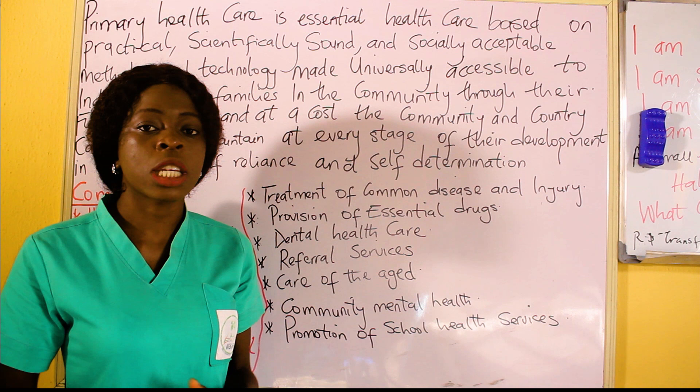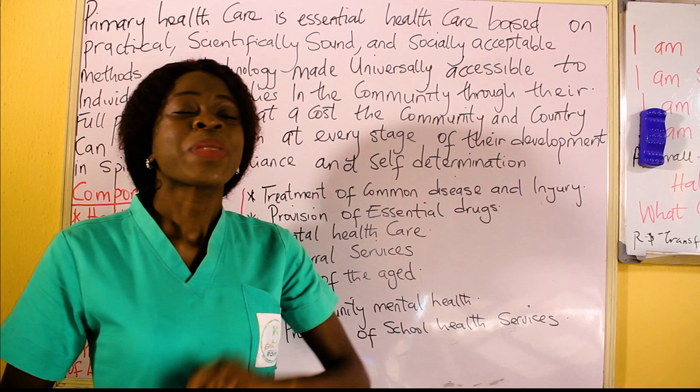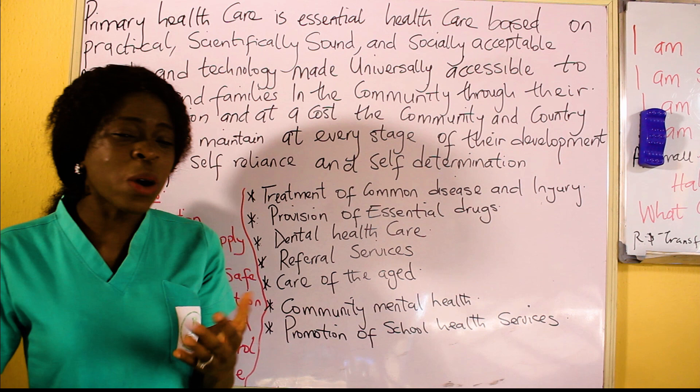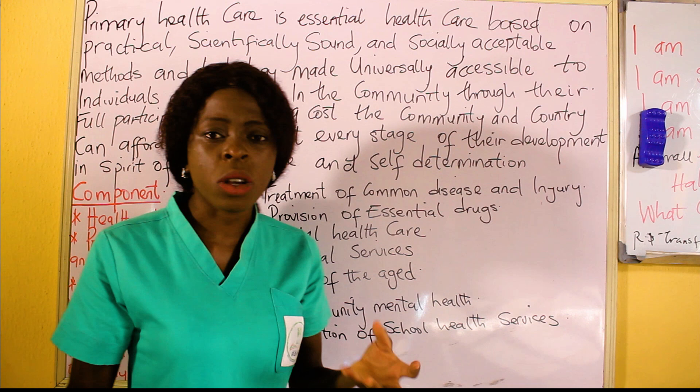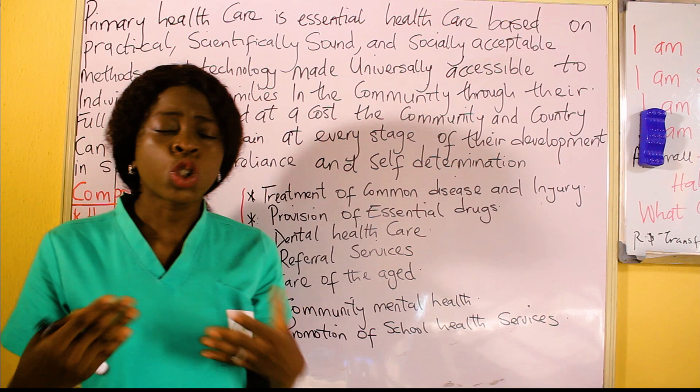Then there is provision of essential drugs. Malaria is very common, so there is no way you enter a primary health care center and not get a malaria drug. You should be able to get basic antihypertensive drugs, malaria drugs, typhoid drugs, antibiotics, antifungals, metoclopramide for vomiting, and infusions. Those are the basic and essential drugs that should always be present in a primary health care center.